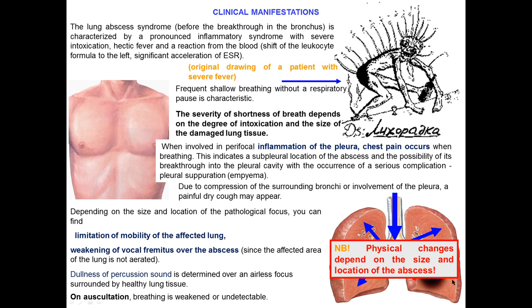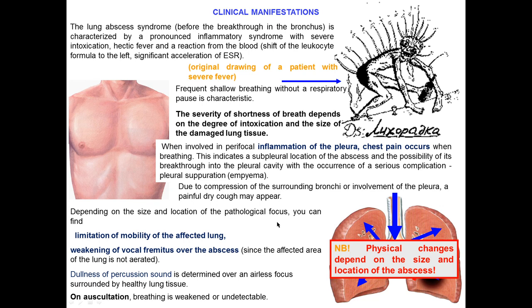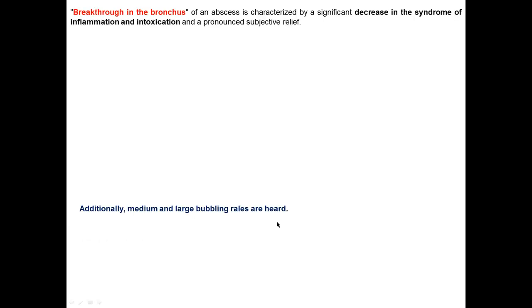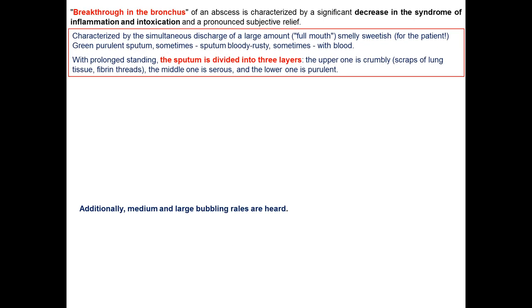During auscultation, you can find that breathing is weakened. Physical changes depend on the size and location of the abscess. For example, if it is localized closer to the pleura and chest wall, you can clearly detect the physical findings in detail. Breakthrough of the abscess into the bronchus is characterized by a significant decrease in the syndrome of inflammation and intoxication, and pronounced subjective relief.